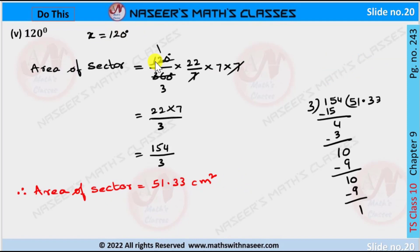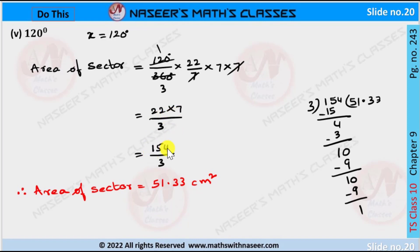Now we substitute x equal to 120 in the area of sector formula. We get 120 by 360 into 22 by 7 into 7 into 7. We cancel 7 in numerator and 7 in denominator, and cancel 120 with 360 to get 1 by 3. In the numerator we get 22 into 7, and in the denominator we get 3. After multiplying 22 with 7 we get 154, written as 154 by 3. After dividing 154 by 3, we get 51.33. Therefore, area of sector is equal to 51.33 centimeter square when x is 120 degrees.